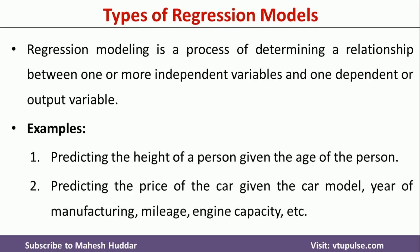We will take one more example. In this case, we want to predict the price of a car given the car model, year of manufacturing, mileage, engine capacity and so on. The car model, year of manufacturing, mileage, and engine capacity are independent variables. If you know these particular values, we want to predict the price of a car, that is the output variable or dependent variable.